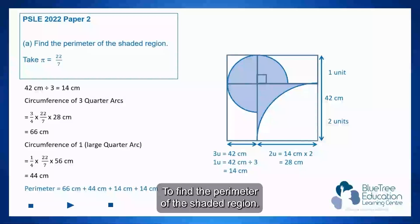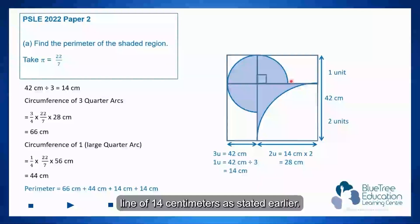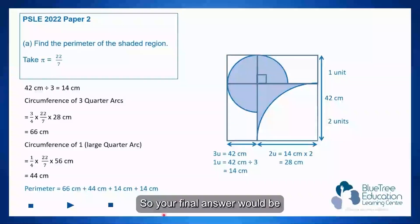To find the perimeter of the shaded region take note we need to add the curve. This is a three-quarter arc. This is the quarter arc and the two straight line of 14 centimeters as stated earlier. So your final answer would be 138 cm.